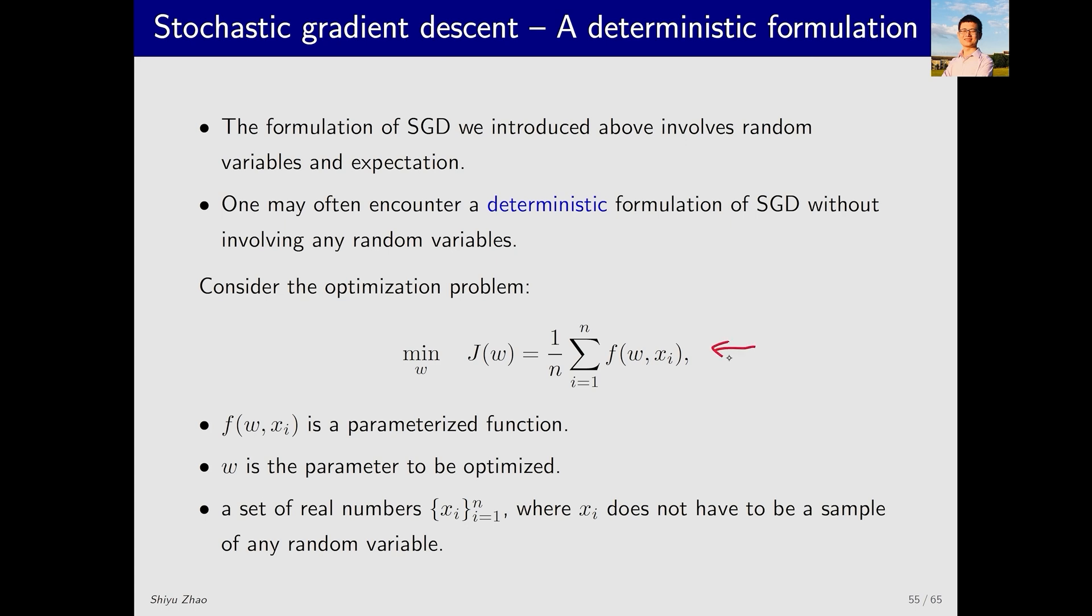It is an optimization problem where the objective function is J(w), and it involves a function f with parameters w and x. This x can take many different values, with a total of n values, which forms the objective function. Note that the set of x values is just a set of numbers, not generated by any stochastic process.